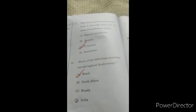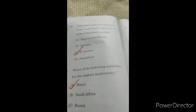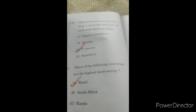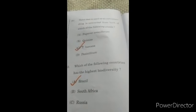Question number 82: Taxol that is used as an anti-cancer drug is extracted from bark of which of the following plants? The correct option answer is C, Taxus.